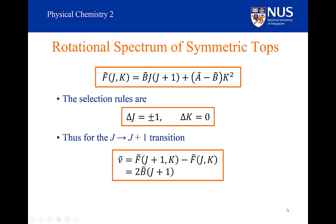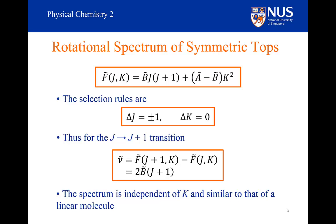Applying ΔK = 0 and computing the energy difference F(J+1, K) − F(J, K), the result does not depend on K — the terms involving K cancel out. This means the spectral lines occur at exactly the same frequencies as for linear systems. The frequency still occurs at 2B(J+1), and the spectral lines are still 2B apart, just like for linear systems. The spectrum is independent of the K quantum number.